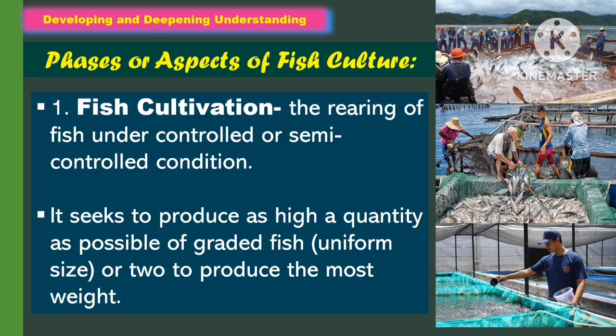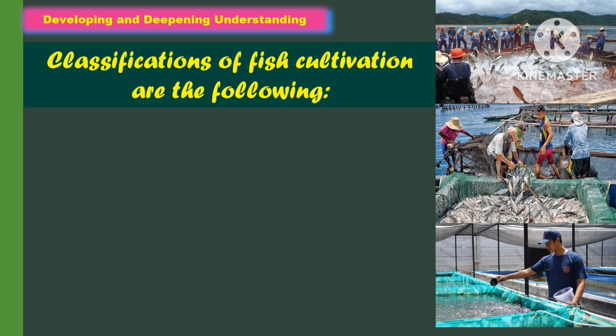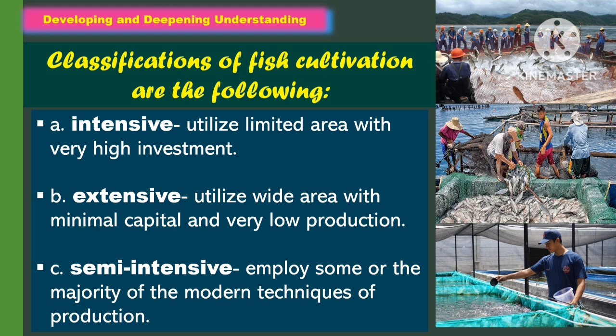For fish cultivation, it is the rearing of fish under controlled or semi-controlled conditions. It seeks to produce as high a quantity as possible of graded fish of a uniform size, or to produce the most weight. The classifications of fish cultivation are: intensive, which utilizes a limited area with very high investment; extensive, which utilizes a wide area with minimal capital and very low production; and semi-intensive, which employs some or the majority of modern techniques of production.